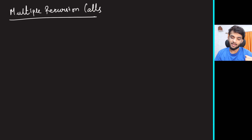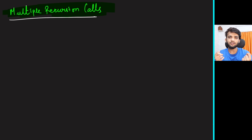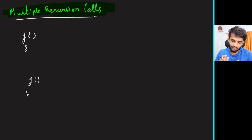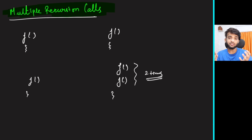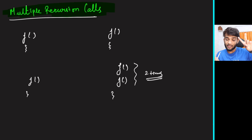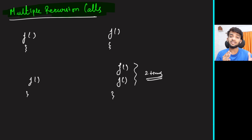Hey everyone, welcome back to the channel. Today we will be learning about multiple recursion calls. Till now you have seen recursion where we had only single recursion calls — basically a function calling itself once. Over here we will be learning a pattern where a function can be called twice, thrice, or four times. In this video I'll teach you how to have multiple recursion calls, and going forward you'll see problems like N-Queens where multiple recursion calls happen inside a function.